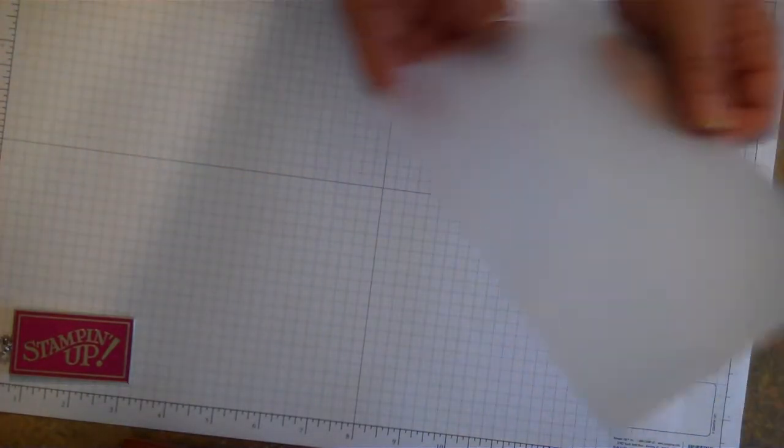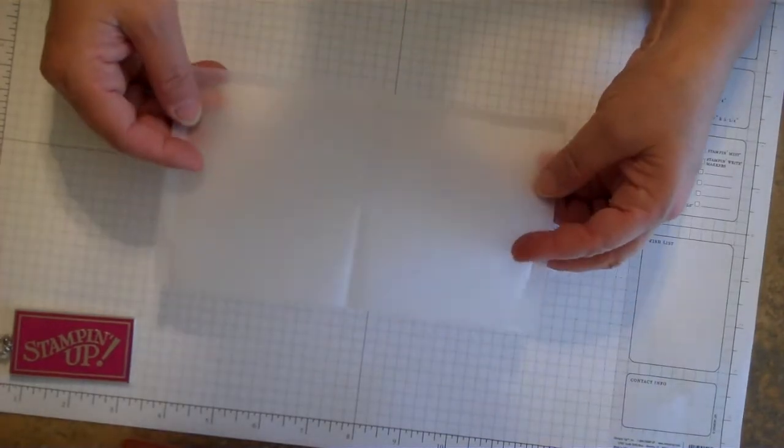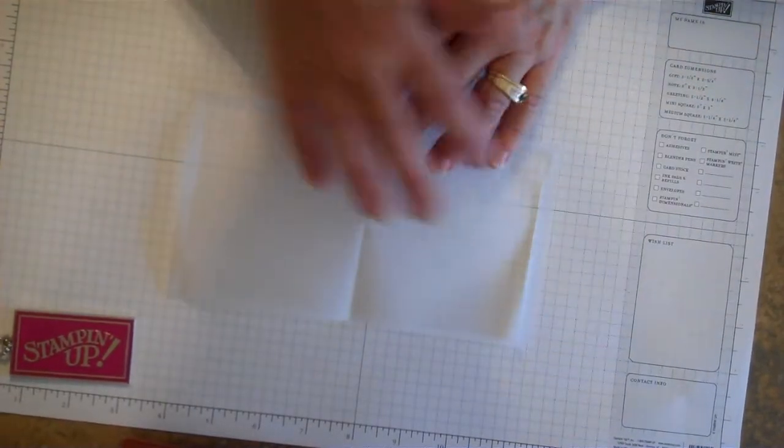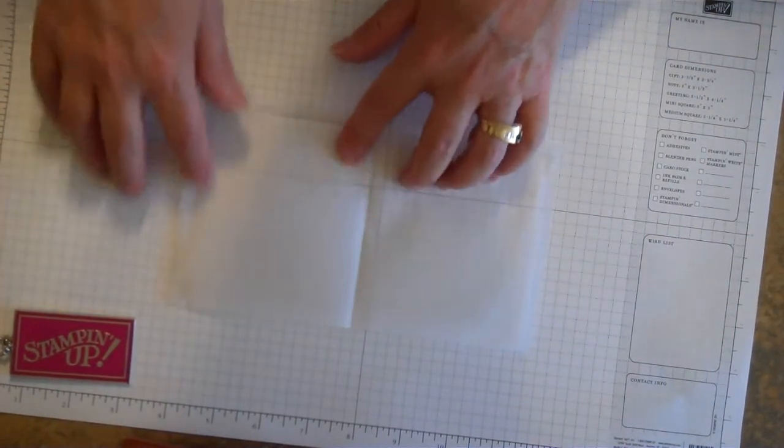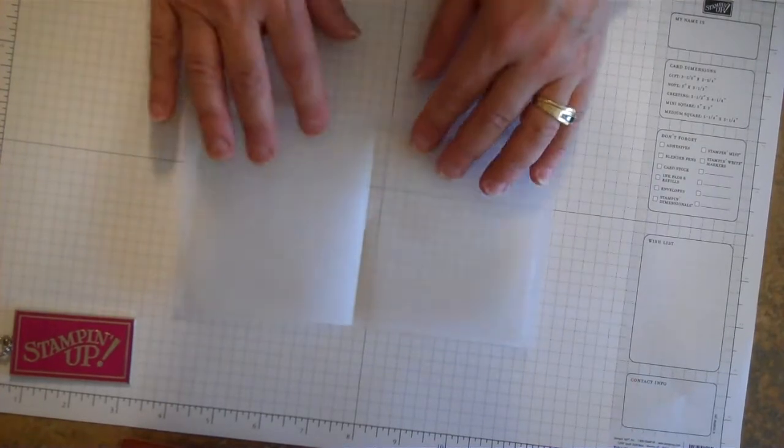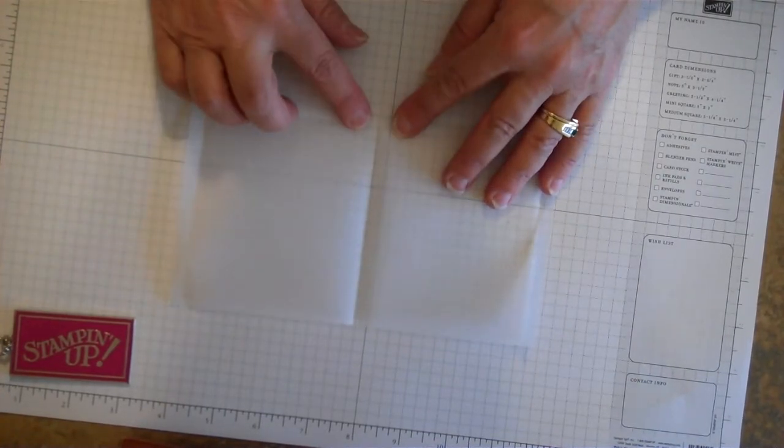You're going to take a piece of vellum paper cut 8 inches long by 4 inches wide and you're going to score it at the 4 inch mark.